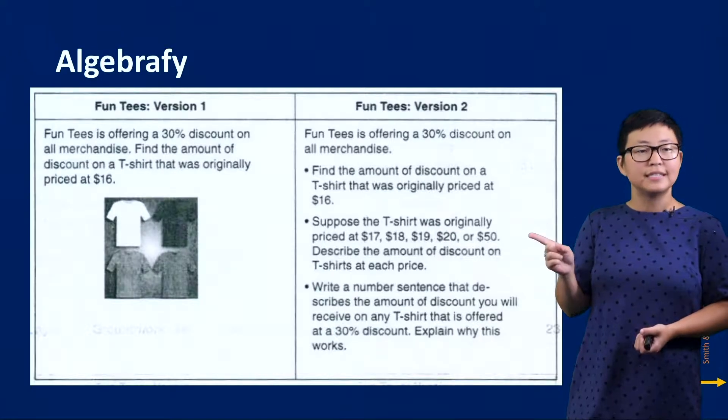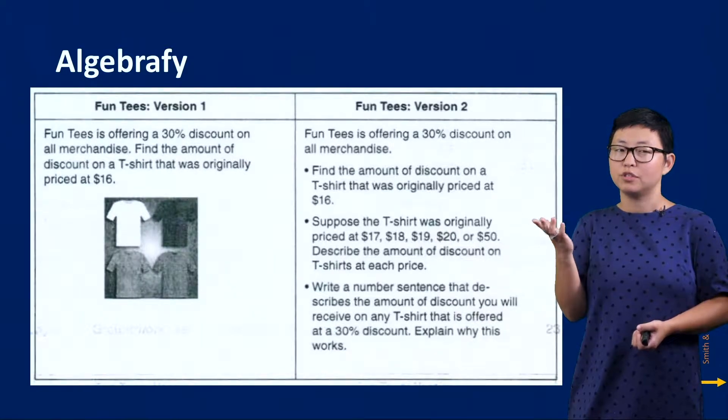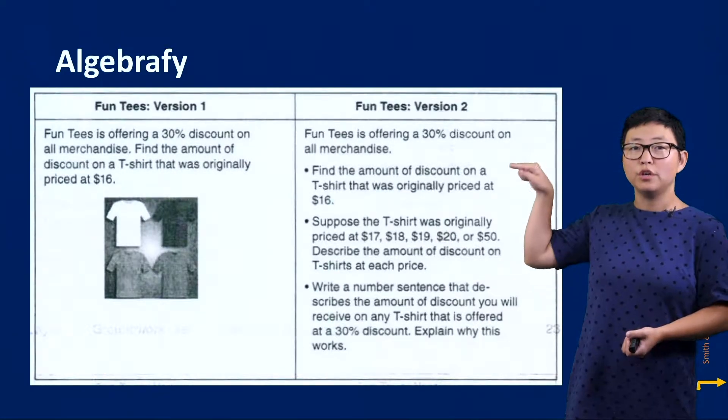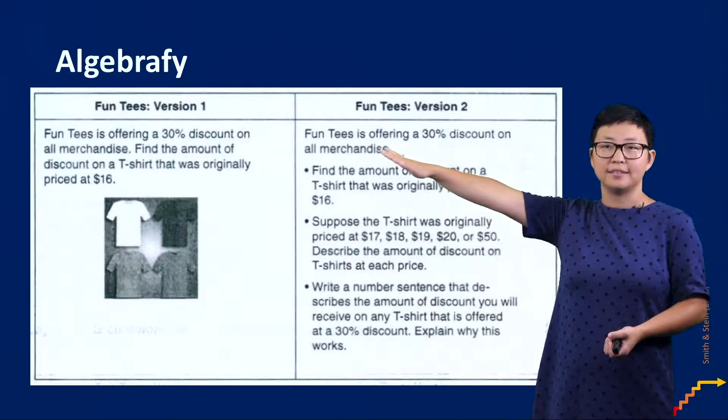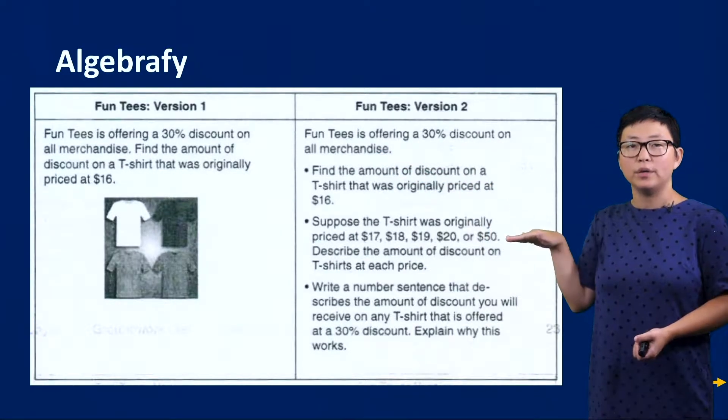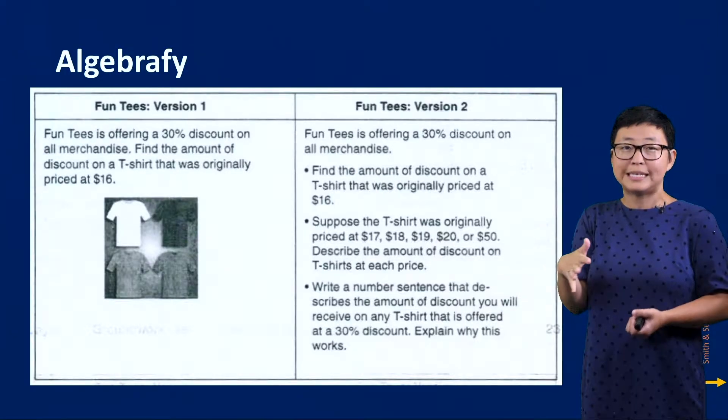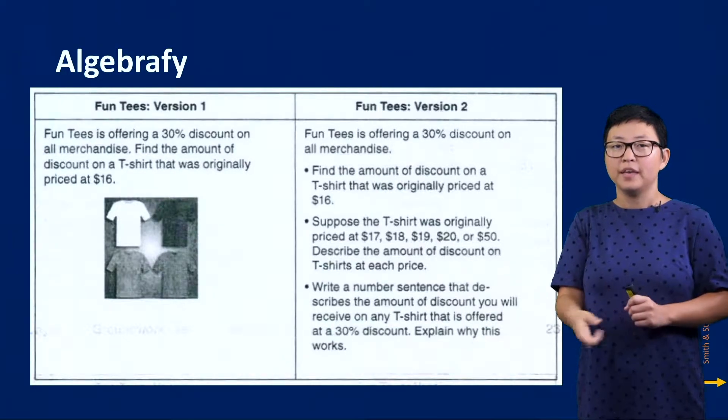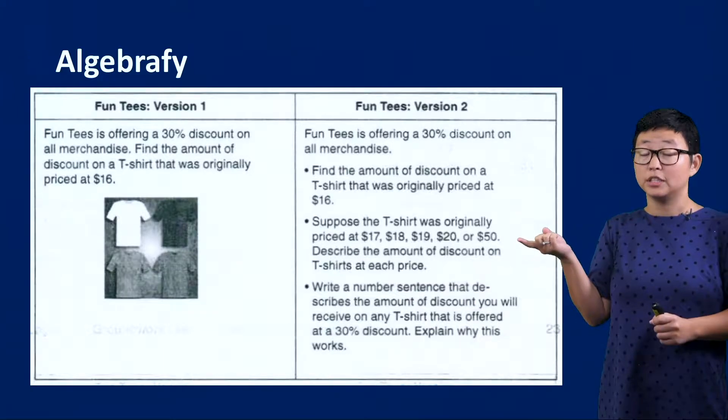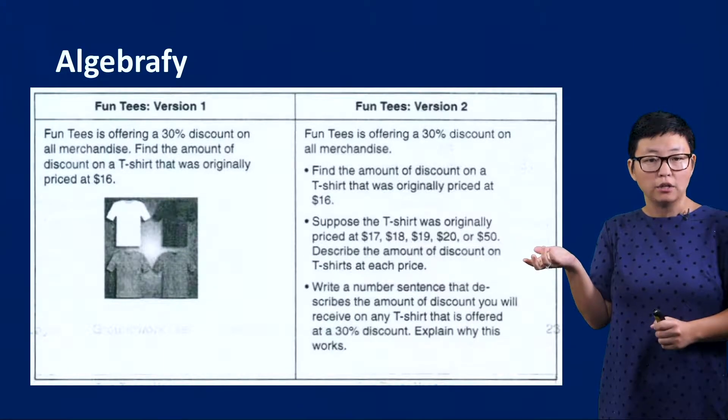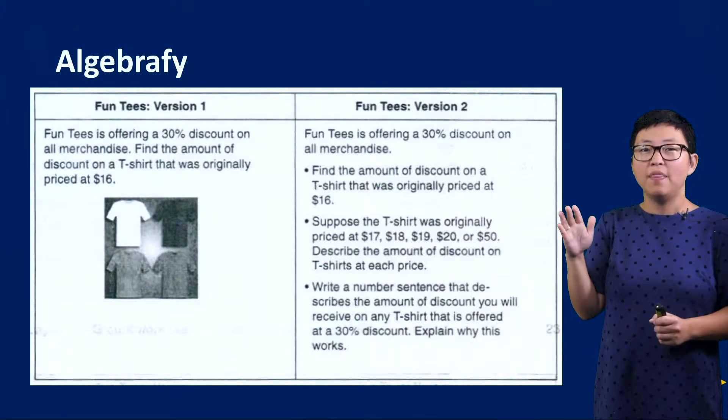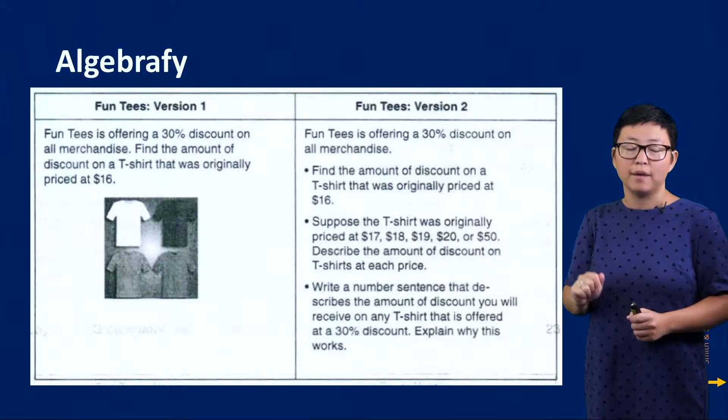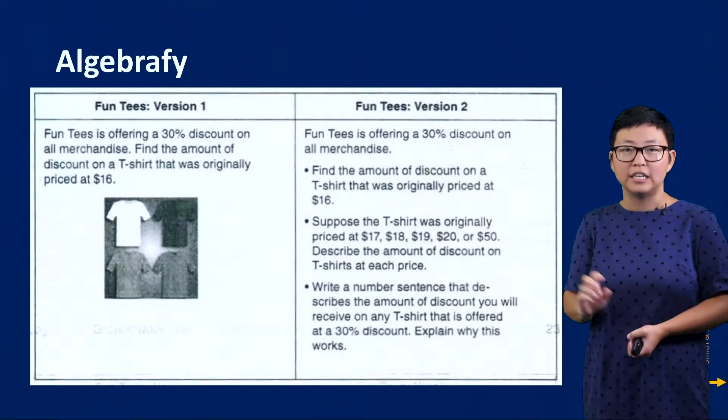But if you look at it over here, the same task asks students to do just a little bit more. So you'll notice this first bullet point is the exact same task as the original. But now instead of just stopping there, it considers what's going to happen to your problem if the originally priced t-shirt is $17, $18, $19, $50, and then it's describing the price of discount at each cost.